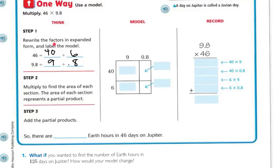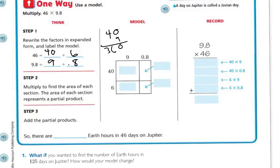I took the 40 plus 6 — there's my 40 and there's my 6. On this side I have my 9 and my 8. When I multiply 40 times 9, I get the product in that section. Then 40 times 8 tenths goes here. 9 times 6 goes here. 6 times 8 tenths goes here. So 40 times 9: 9 times 0 is 0, 9 times 4 is 36, so the partial product is 360.